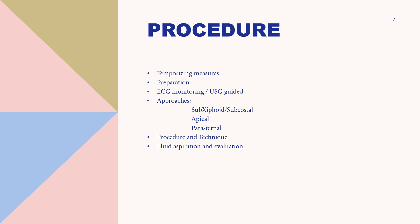However, studies also reveal that the apical approach is associated with a greater incidence of pneumothorax than the traditional subcostal approach. Regarding the approaches, we can use either ECG-monitoring-guided or ultrasound-guided pericardiocentesis. If ultrasound is not readily available, electrocardiographic monitoring can be used to prevent puncture of the ventricle. In this technique, an extra assistant is needed to ensure sterile technique, observe for dysrhythmias, and confirm the ECG machine is functioning properly.